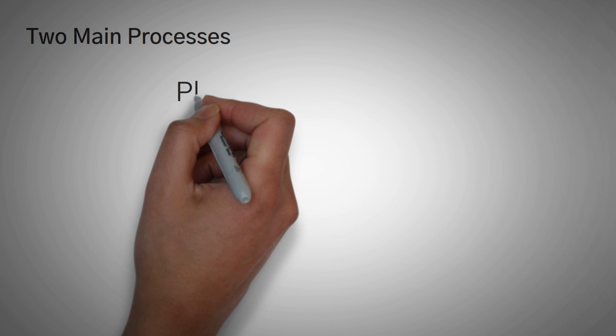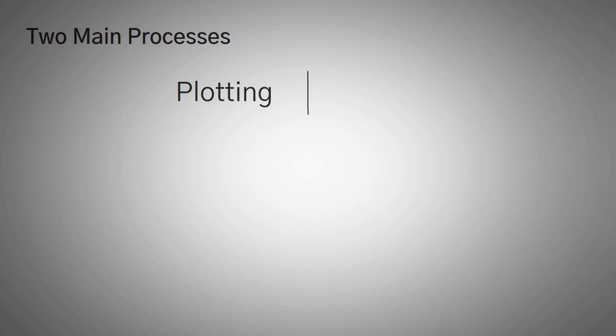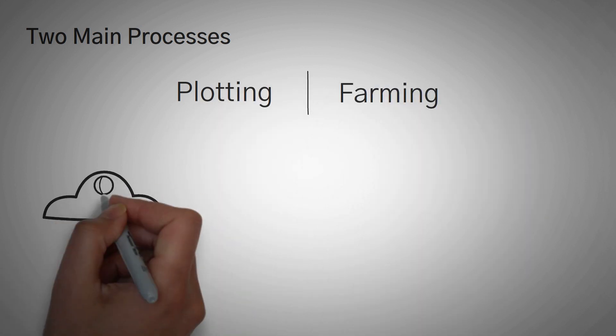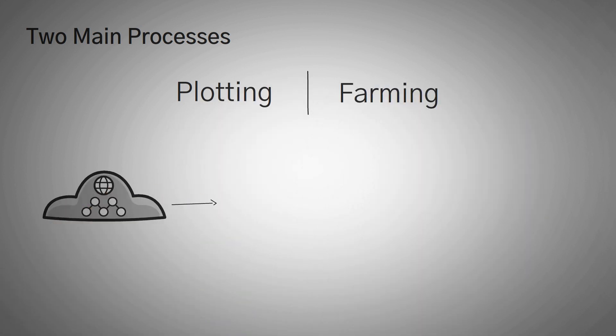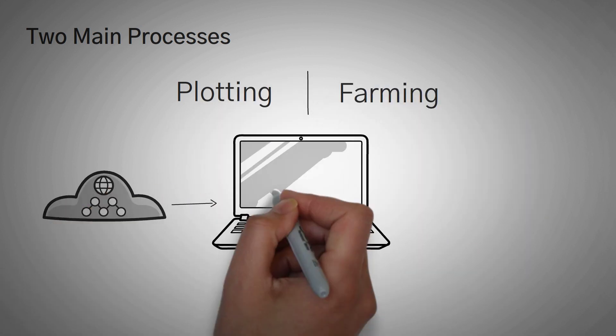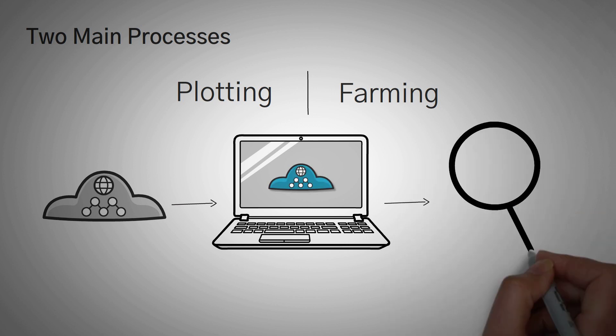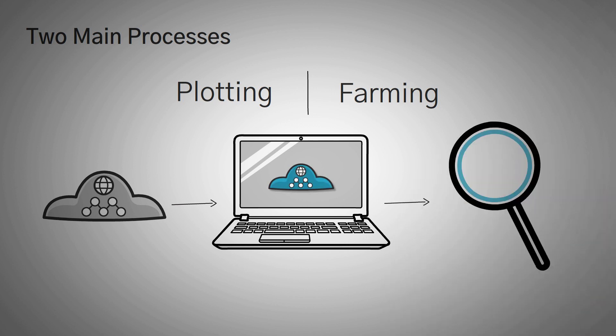When it comes to Chia, there are two main processes. The first is plotting, and the second is farming. Plotting is essentially putting the data on a storage device that you own, and farming is checking that you still have it on that storage device.